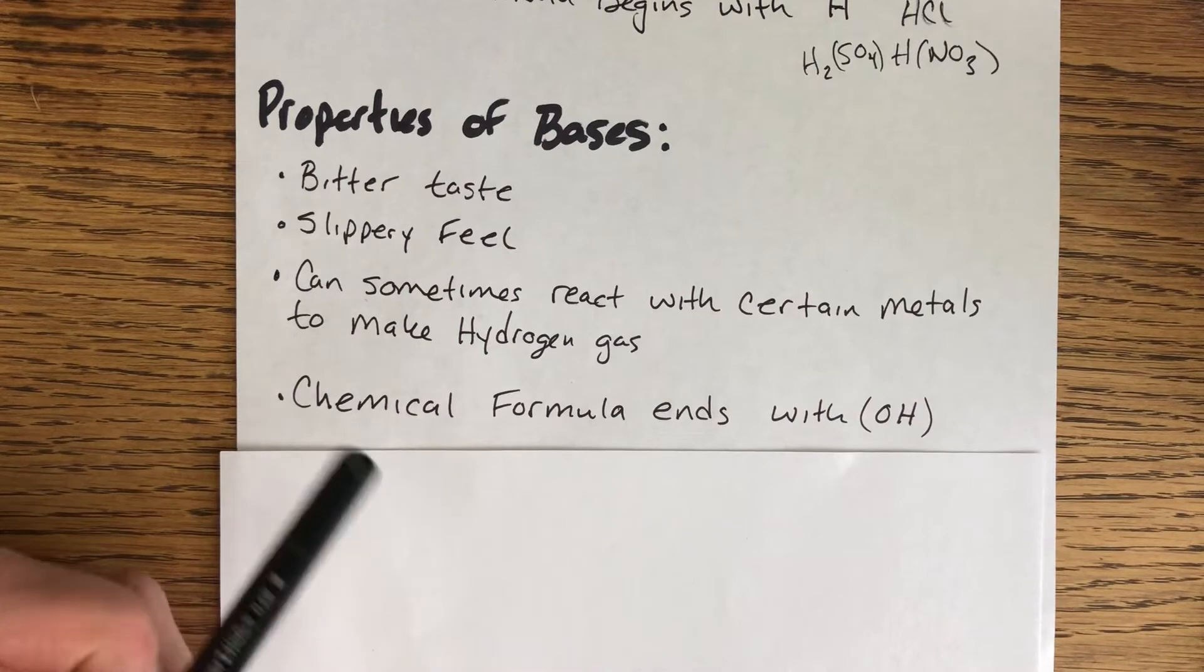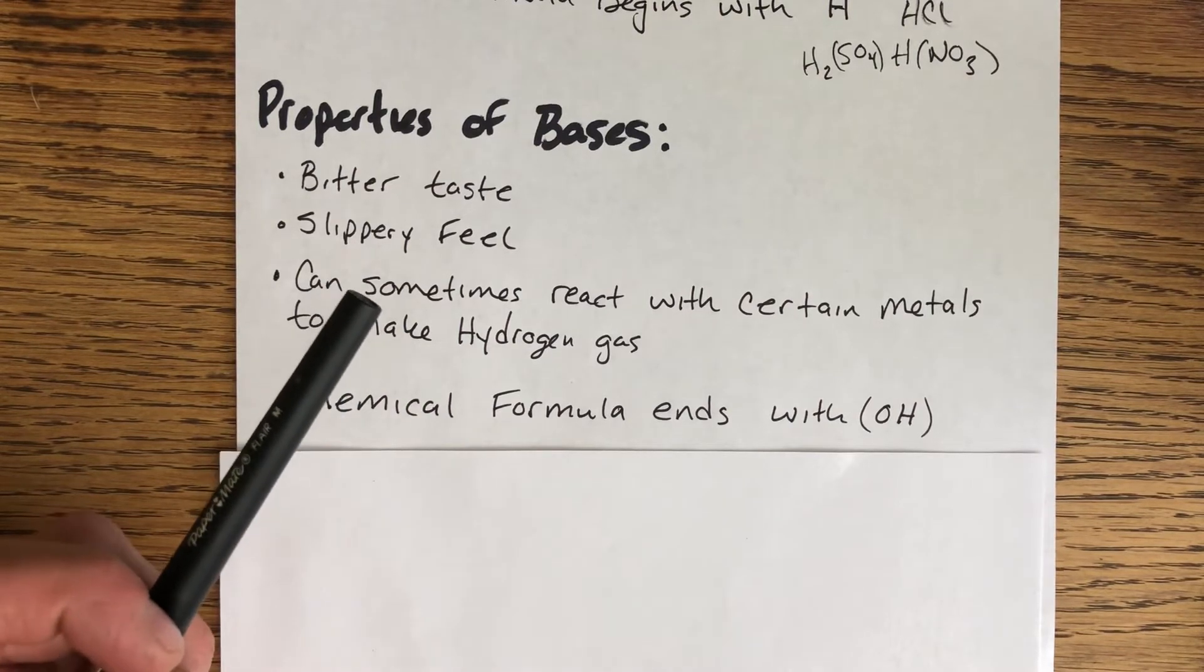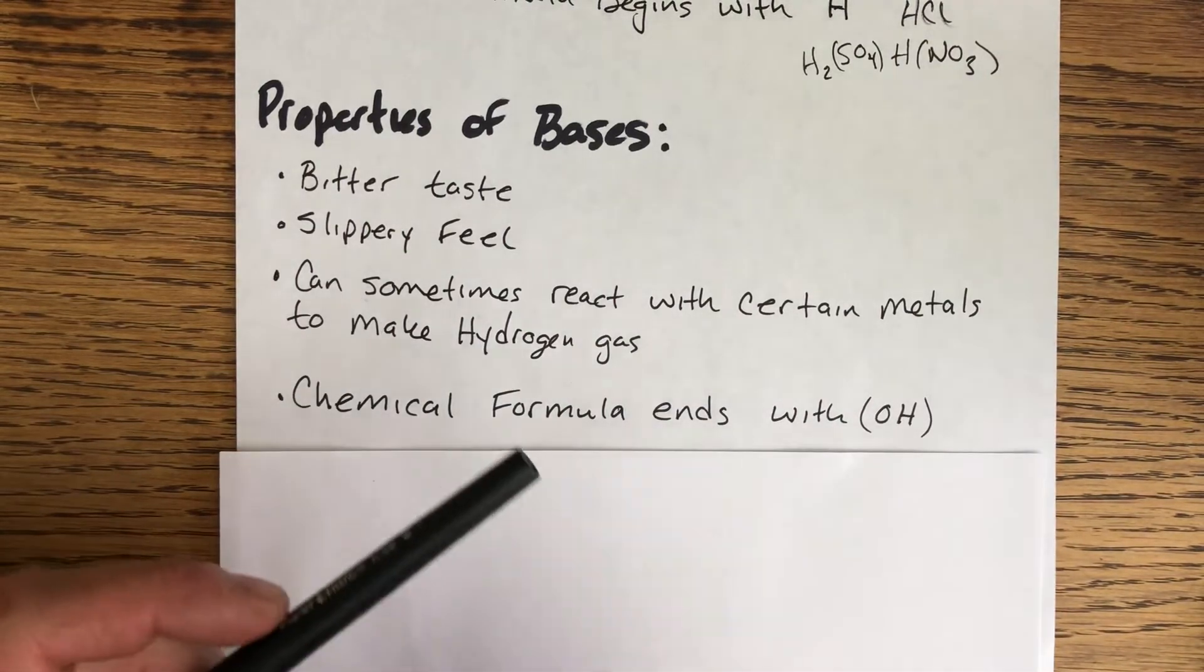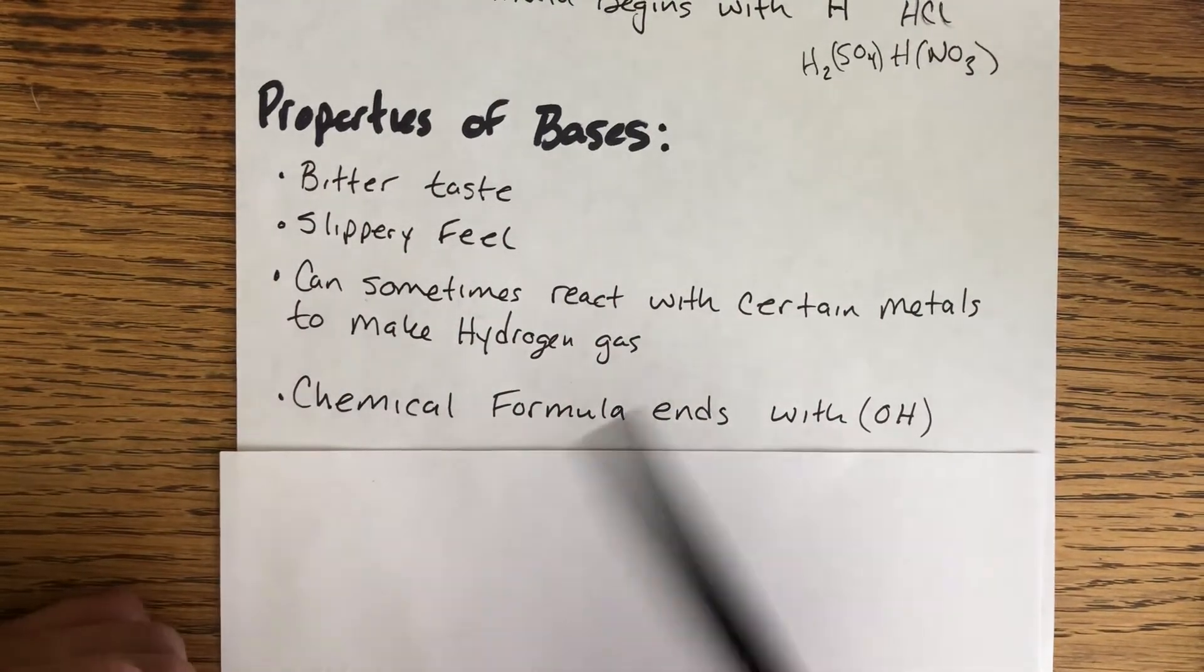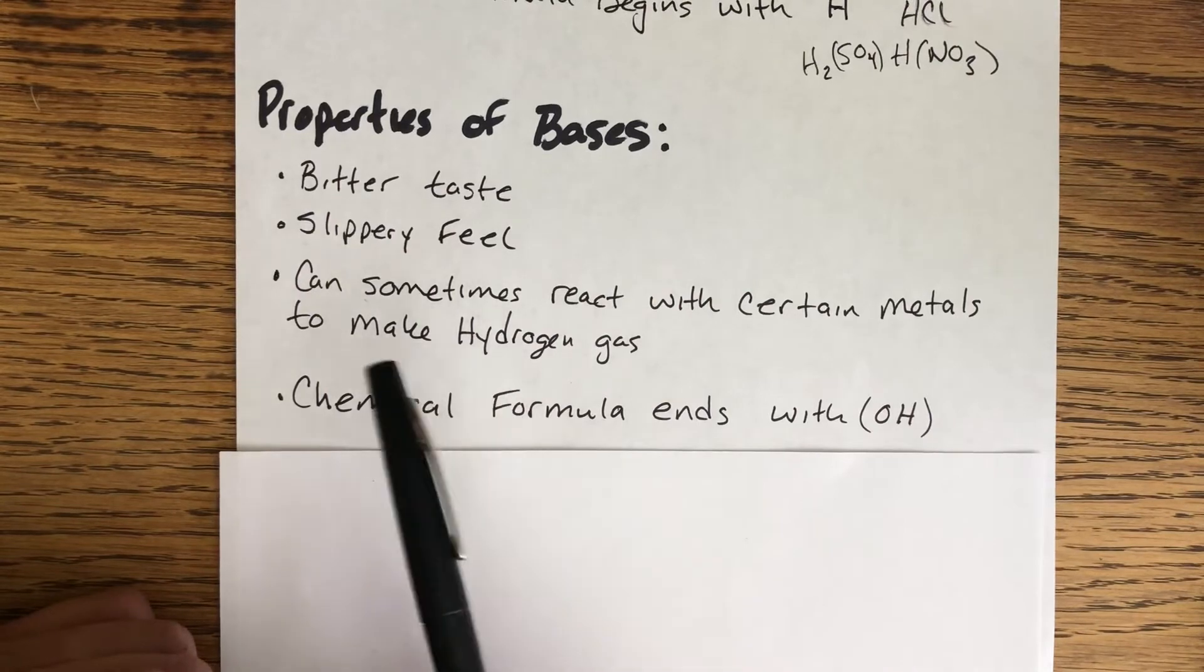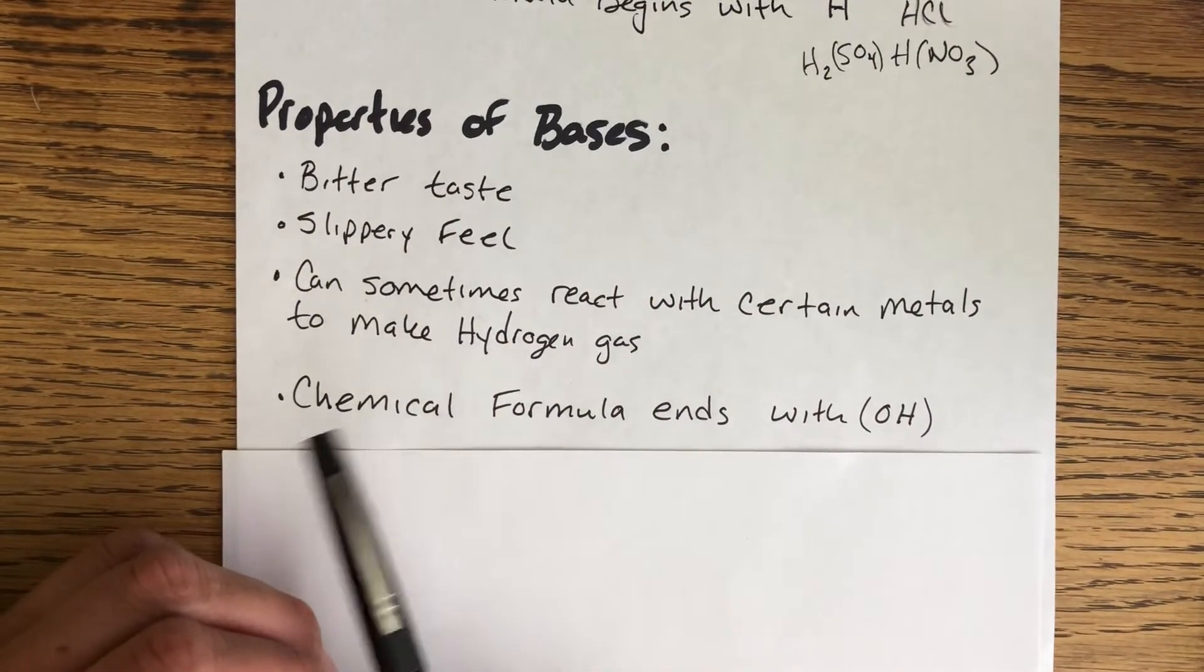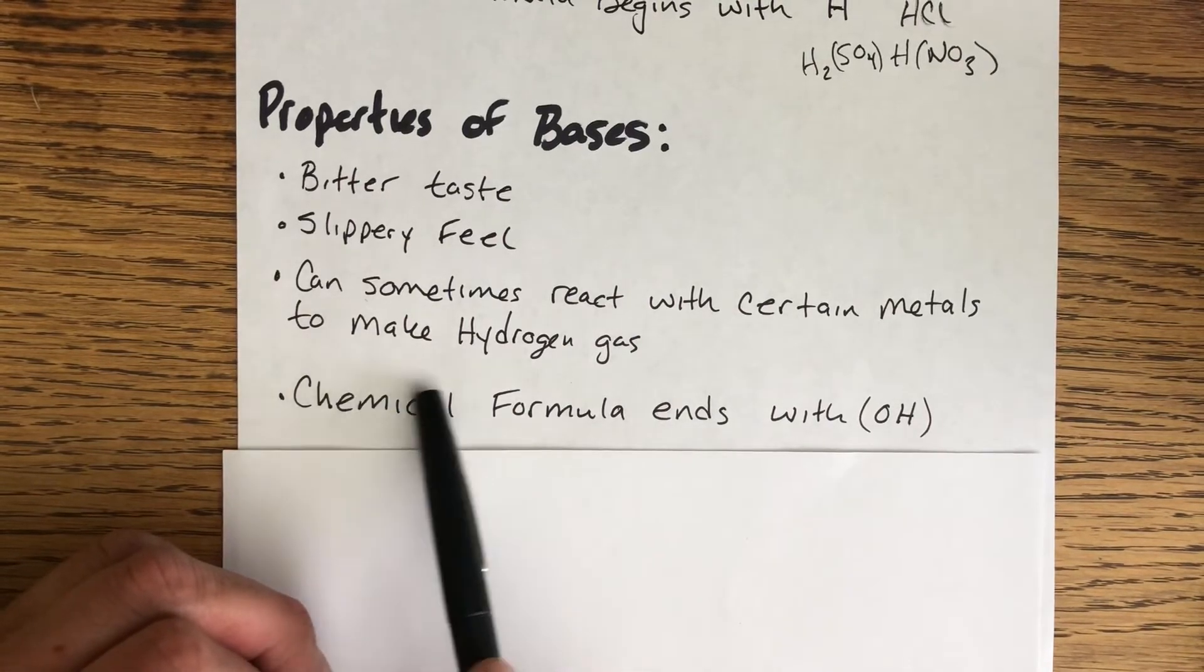I don't know if you've ever gotten bleach or something on your fingertips, but it makes them really kind of slimy when there's bleach on there. They can, not all the time, but sometimes they'll react with certain metals to make hydrogen gas.